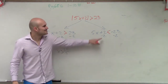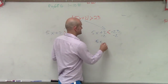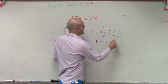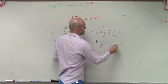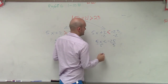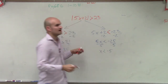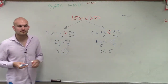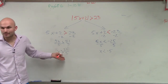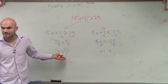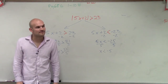Here, you subtract 2, and you get 5x is less than negative 25. Divide by 5, and therefore x is less than negative 5. So you can now say x has to be greater than 21 over 5, or x has to be less than negative 5.